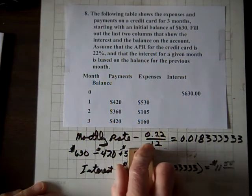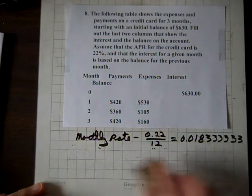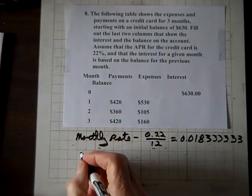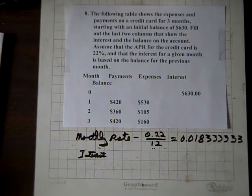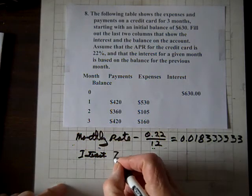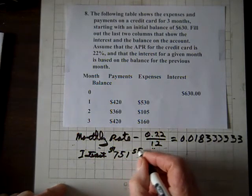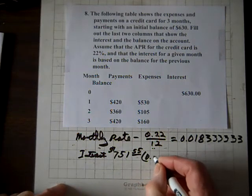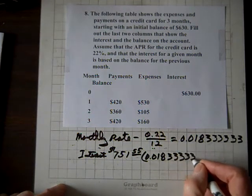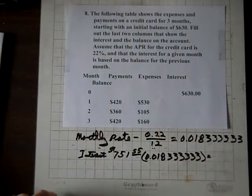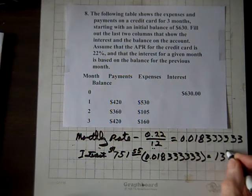except this time, to compute the interest, we're going to have, so the interest will be on $751.55 times 0.018. And we'll put six of these threes down. And when we find that product, we get an interest of $13.78. $13.78.